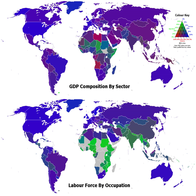Following the Industrial Revolution, possibly a third of the economic output comes from manufacturing industries. Many developed countries and many developing, semi-developed countries — China, India, etc. — depend significantly on manufacturing industry.